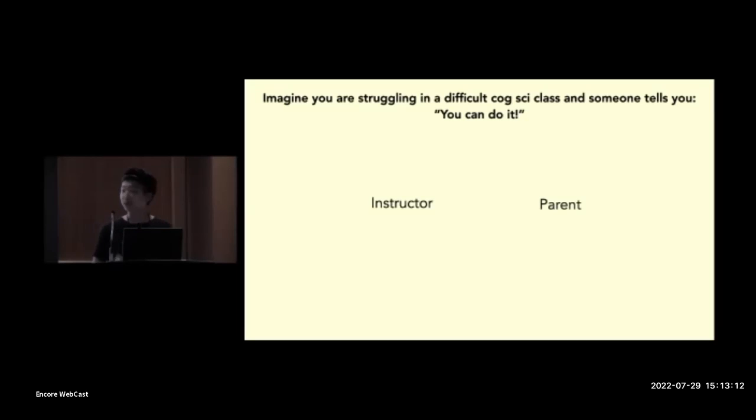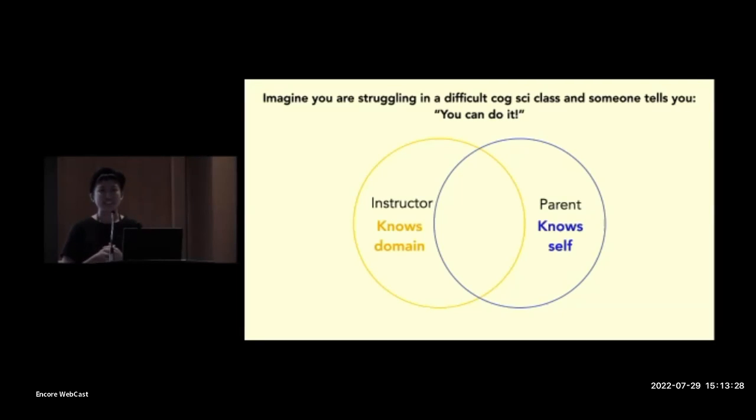And what I'll propose today in this talk is that reasoning about the speaker's knowledge may be particularly important here. So let me give you an example of what I mean. Let's imagine that you're struggling in a difficult cognitive science course at the beginning of a semester, and someone tells you, hey, you can do it. Let's imagine that your instructor and your parent each tell you this. Well, if you think about this, your instructor obviously knows the domain. They know the class well, but they may not know you or your abilities very well at this point in the semester. On the other hand, your parent knows you well, but presumably knows nothing about cognitive science or graduate school courses. And so for both of these people, you might not fully believe their encouragement because they don't have full knowledge of both you and the domain.